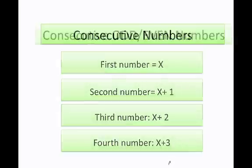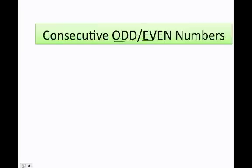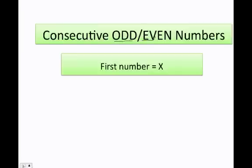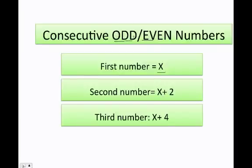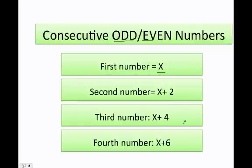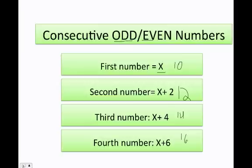What about consecutive odd or even numbers? It's easy: the first number is x, the second number is x plus 2 — yes, even for odd it's x plus 2 — the third number is x plus 4, and the fourth is x plus 6. For example, for even numbers starting at 10: the next even number is 10 plus 2, which is 12, then 14, then 16.